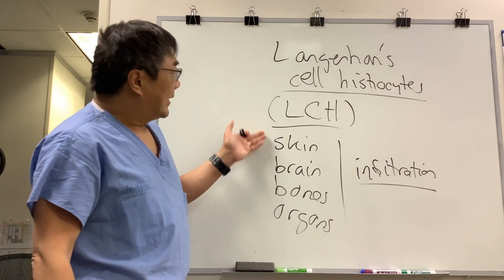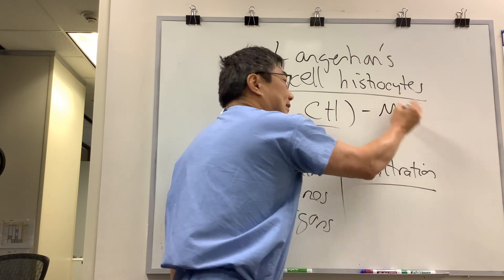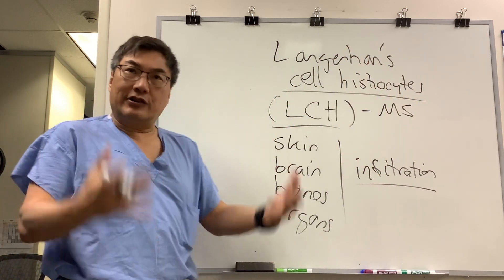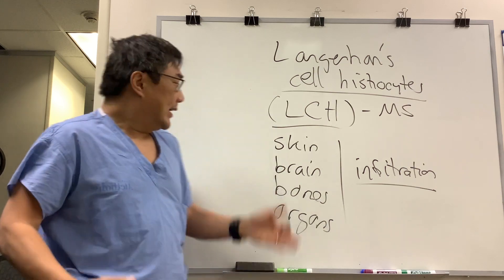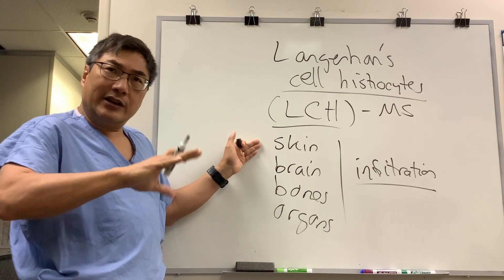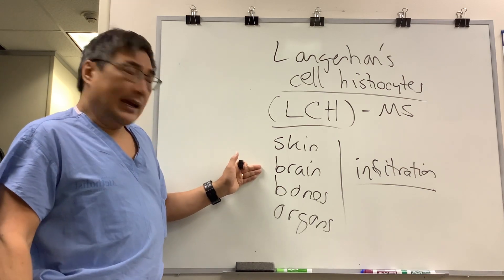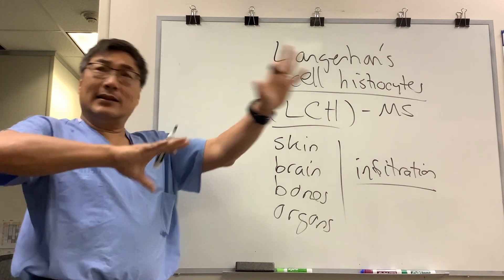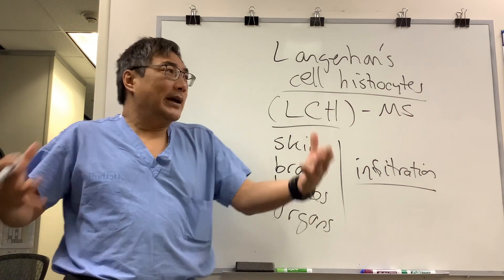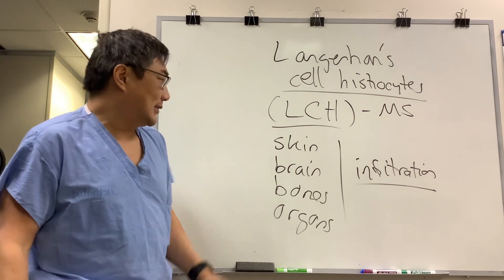In a kid, Langerhans cell histiocytosis is usually the multi-system form. That means they have fever, other constitutional symptoms, and fatigue. They have skin involvement that can look like eczema or other inflammatory dermatologic conditions. It can go into bone and make lytic lesions, and it can go into organs causing splenomegaly and other infiltrative-type mass lesions.